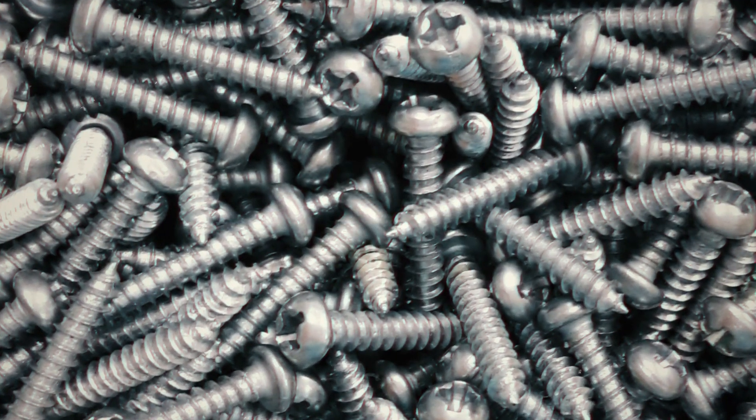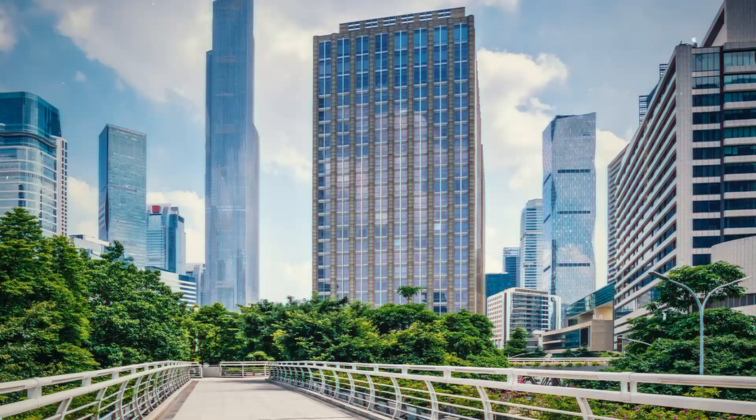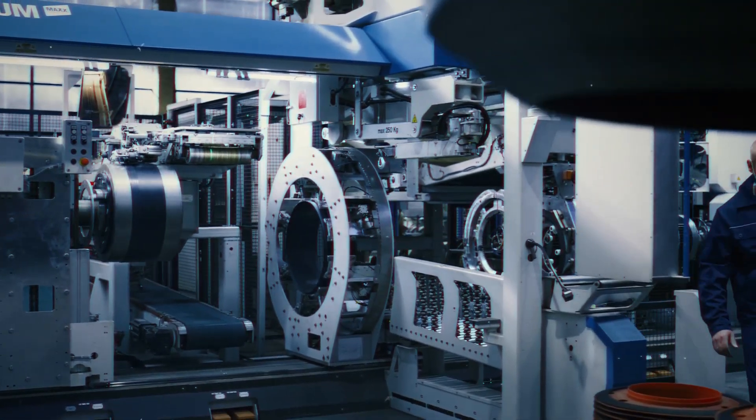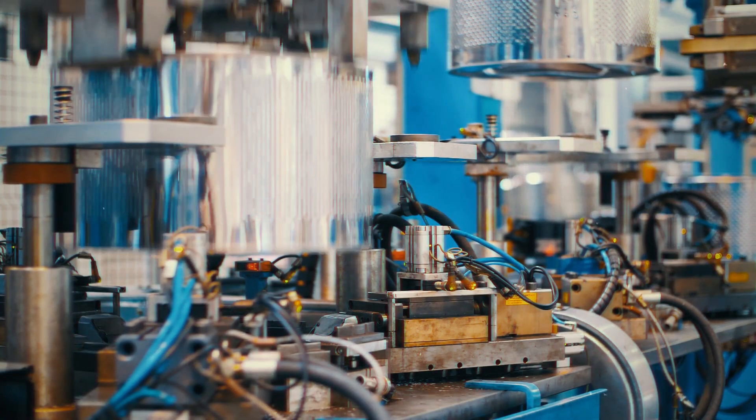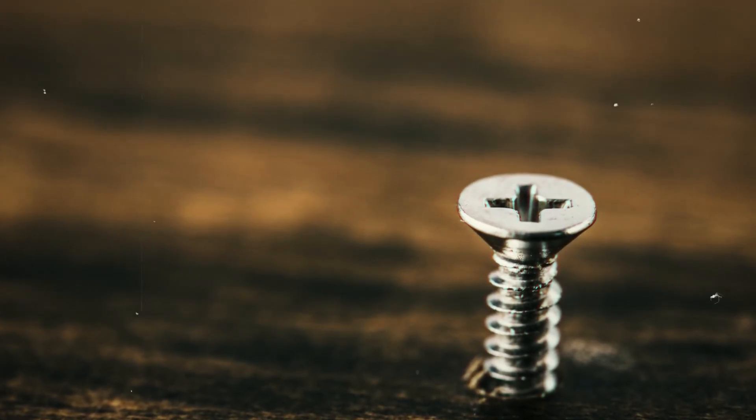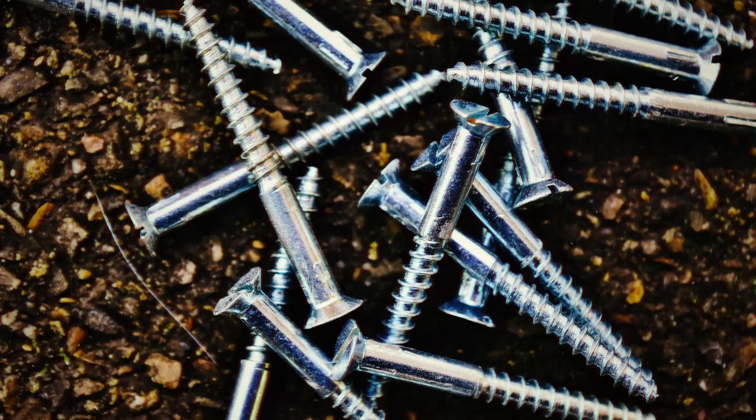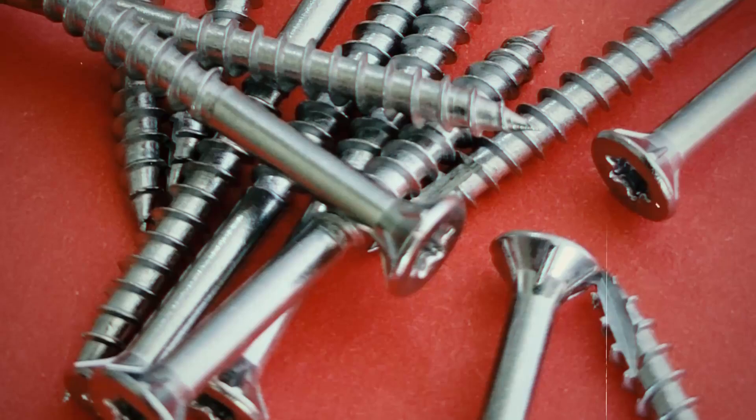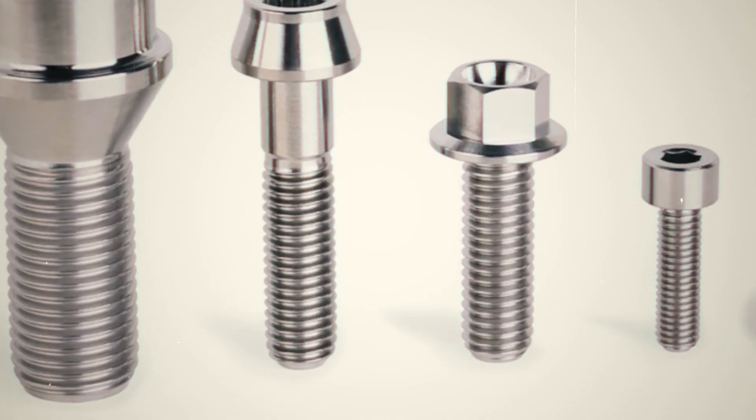The ability to mass-produce screws meant that they could be used in everything, from buildings and infrastructure to household items and toys. The reliability of screws also made them essential in mass production, providing stability and consistency to countless manufacturing processes. The humble screw became a vital part of the modern world, holding together the very fabric of everyday life. As screws became common, their materials and designs changed too. Engineers made stainless steel and titanium screws that could handle tough conditions and resist rust.